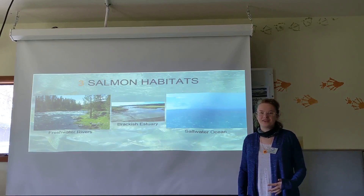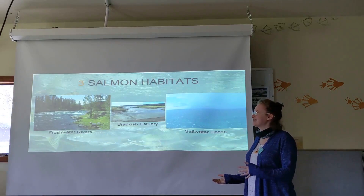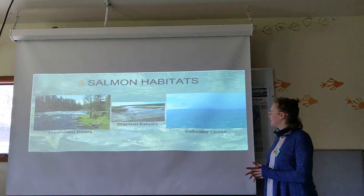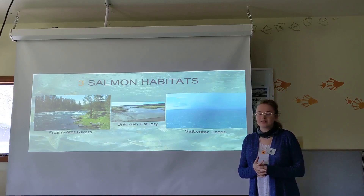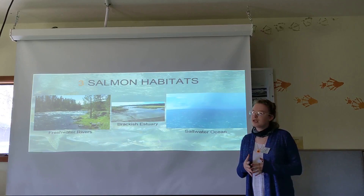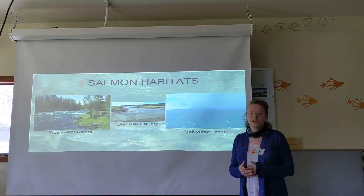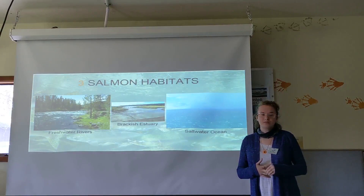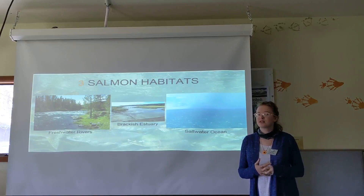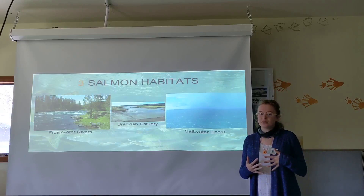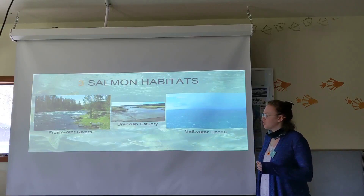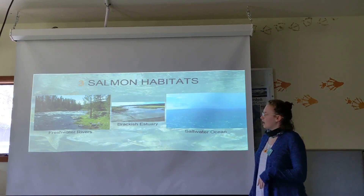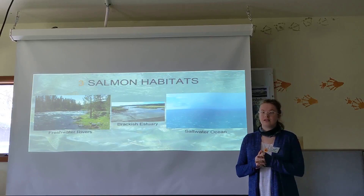My name is Daisy, I'm an environmental educator here at the Salmon Center. I'm here to talk about the three salmon habitats: freshwater rivers, brackish estuary, and ocean with salt water. The freshwater river is where salmon start as eggs and end as spawners. They're normally in the rivers for a couple of years, then transition into the brackish estuary, where they spend the shortest amount of time — only a couple of months — because it's getting them used to salt water. Then they head to the ocean, where they spend three to seven years of their lives as adults.